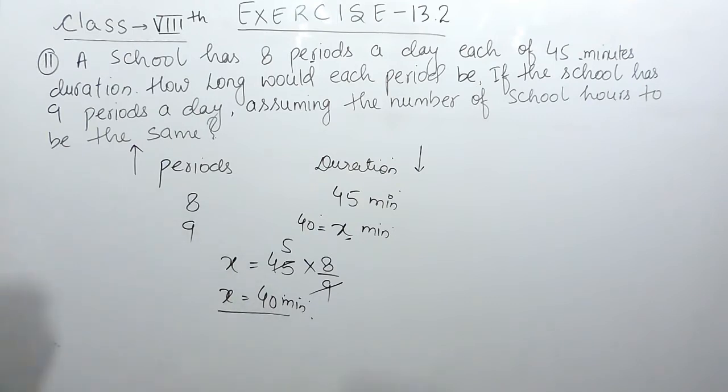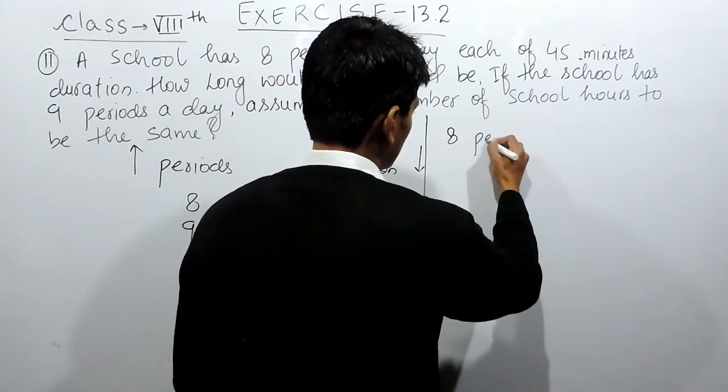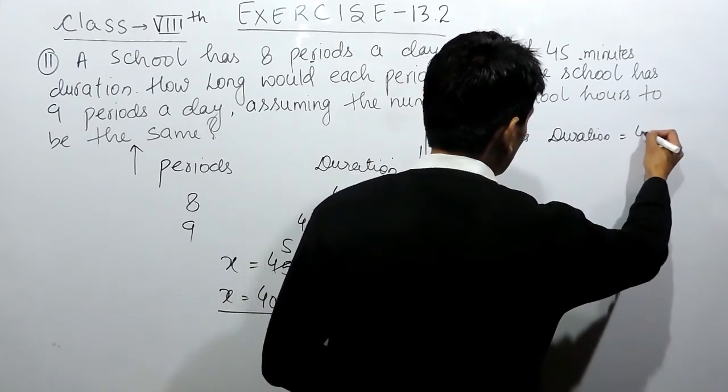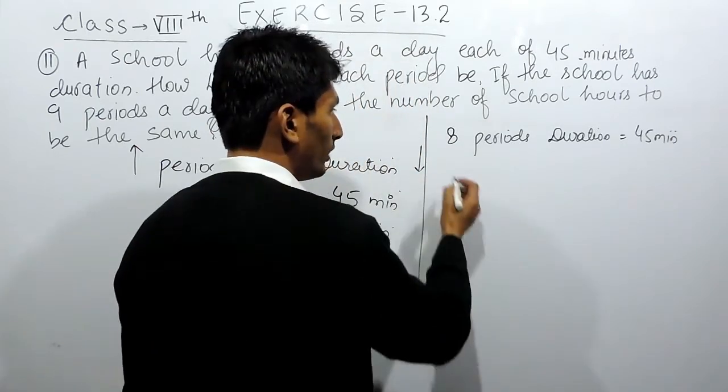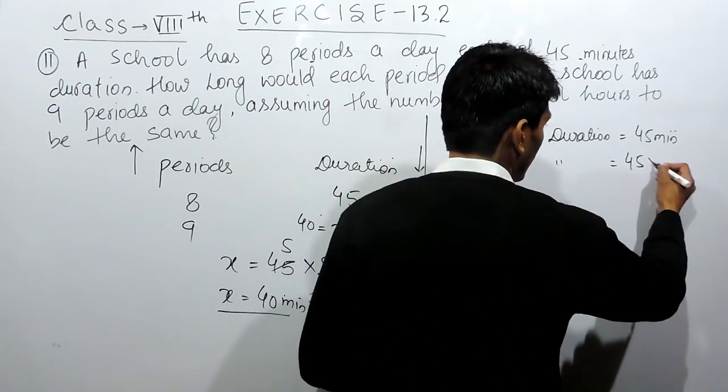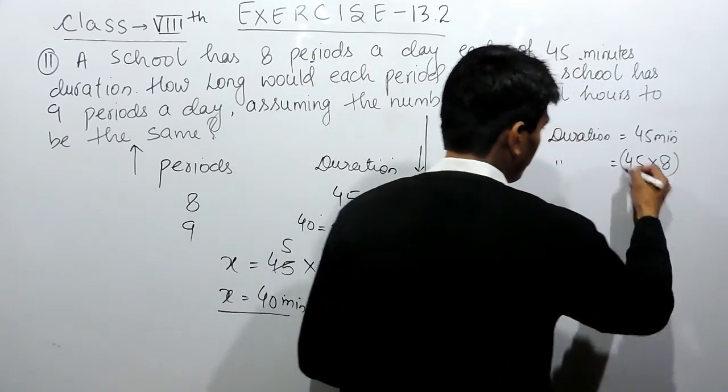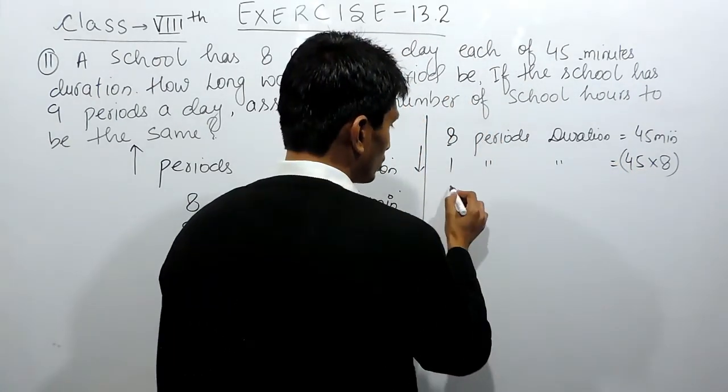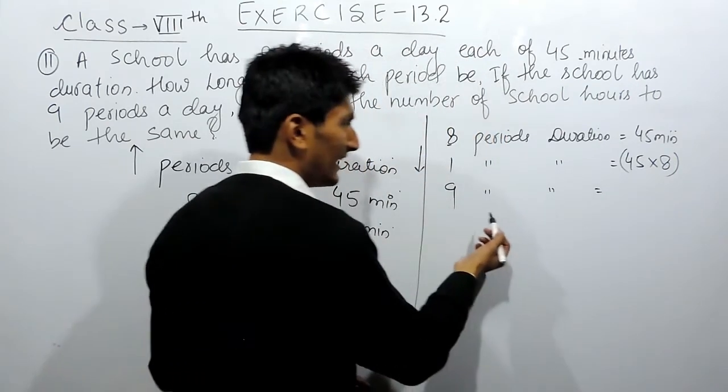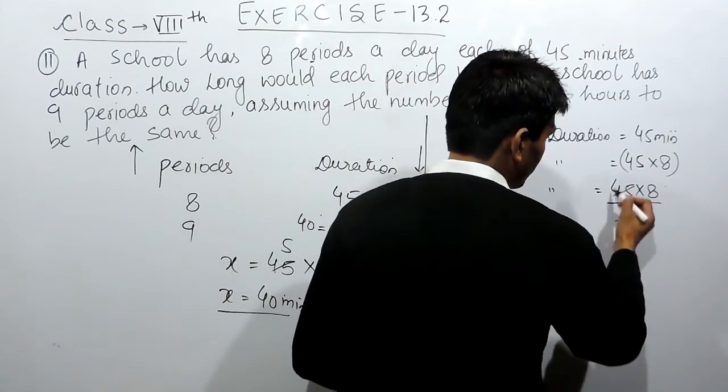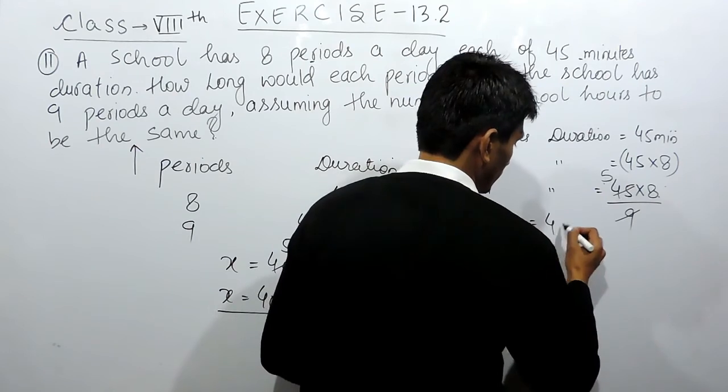There could be another method. If a school has 8 periods, the duration for each period will be 45 minutes. If a school has only 1 period, the duration given to that period will be more. To increase this time, I have to multiply by 8, so the duration of this only period will be 8 × 45 minutes. Now the school has 9 periods, so the duration will be less, so you divide by 9. This can be cancelled 5 times, and 5 × 8 is 40 minutes.